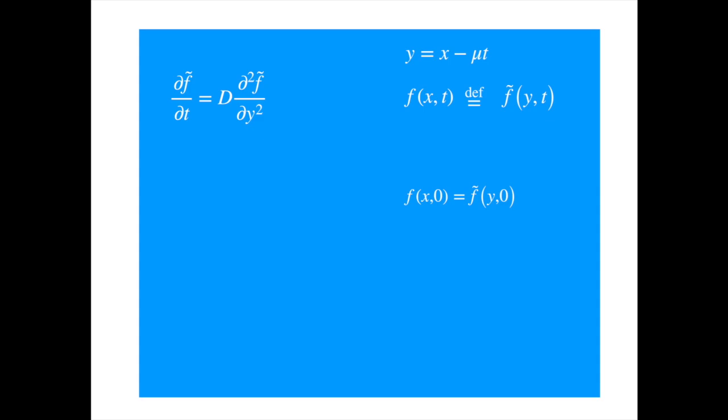Now we know the solution of this equation from the previous video, so we write the solution in terms of y, where m is the number of particles at the starting location. And now we just need to substitute for y to get the solution in terms of the original variable x.